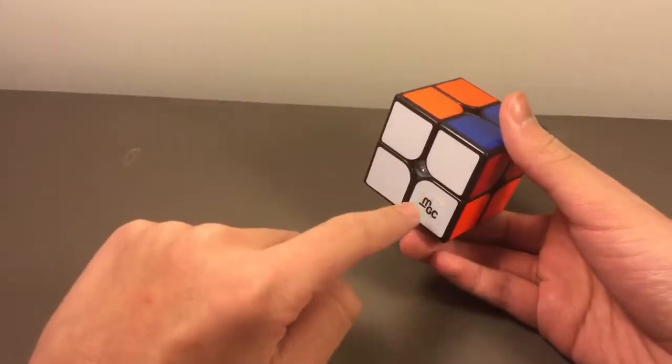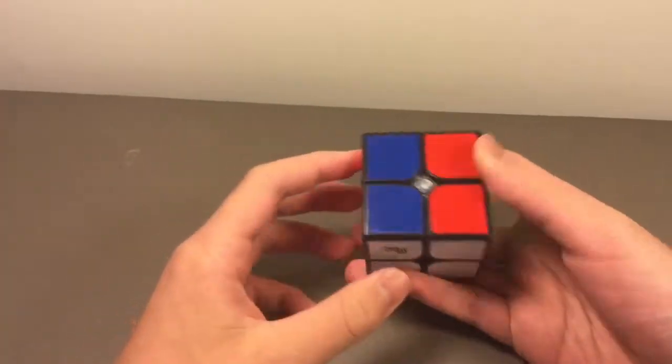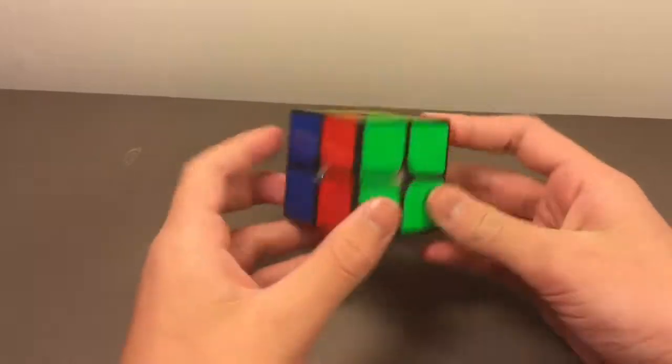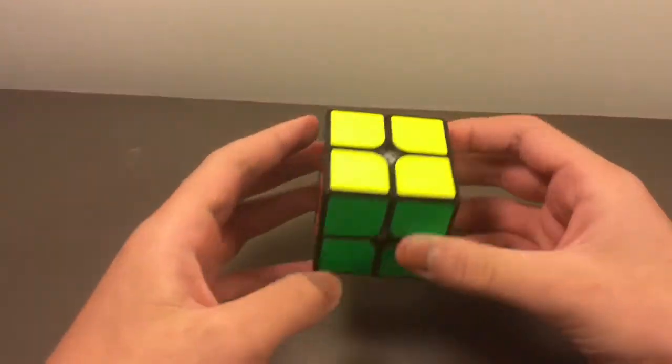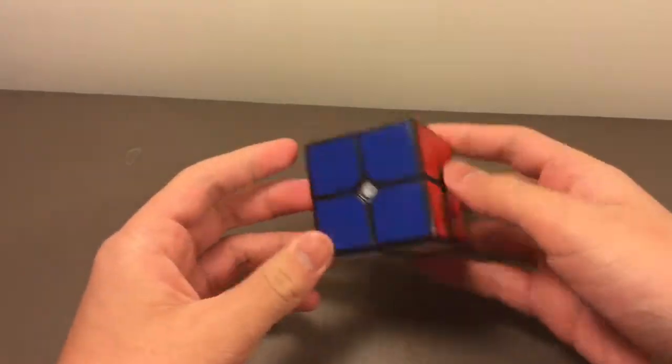So the corners on the bottom and the corners on the top are not permuted properly. So you do one algorithm and it solves everything. In this case, you would do an algorithm that looks like this and that'll solve everything.